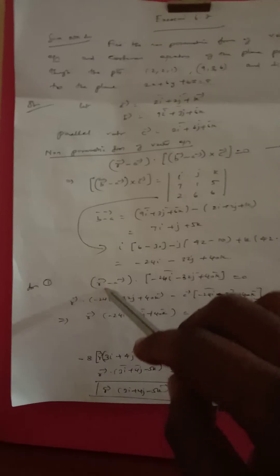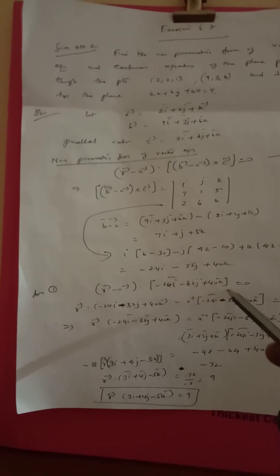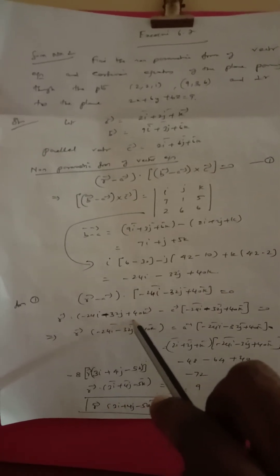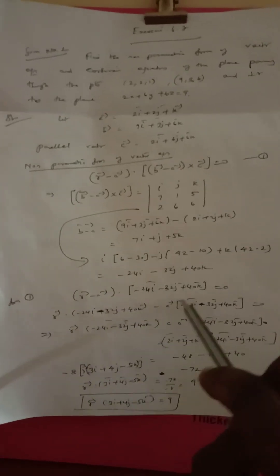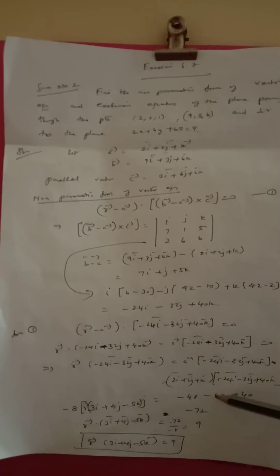Apply the formula: r vector minus a vector, dotted into minus 24i minus 32j plus 40k, equals 0. Expanding: r vector dot (minus 24i minus 32j plus 40k) minus a vector dot (minus 24i minus 32j plus 40k) equals 0.